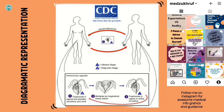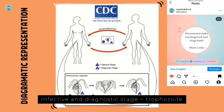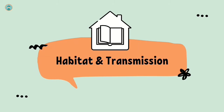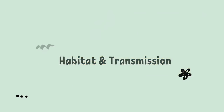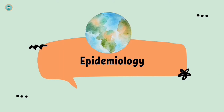It lives in the genital organs of men and women. Its transmission occurs via sexual contact. Its infective and diagnostic stage is the trophozoite. Regarding habitat, the primary locations of the organism are the vagina and the prostate. It is found only in humans — there is no animal reservoir.